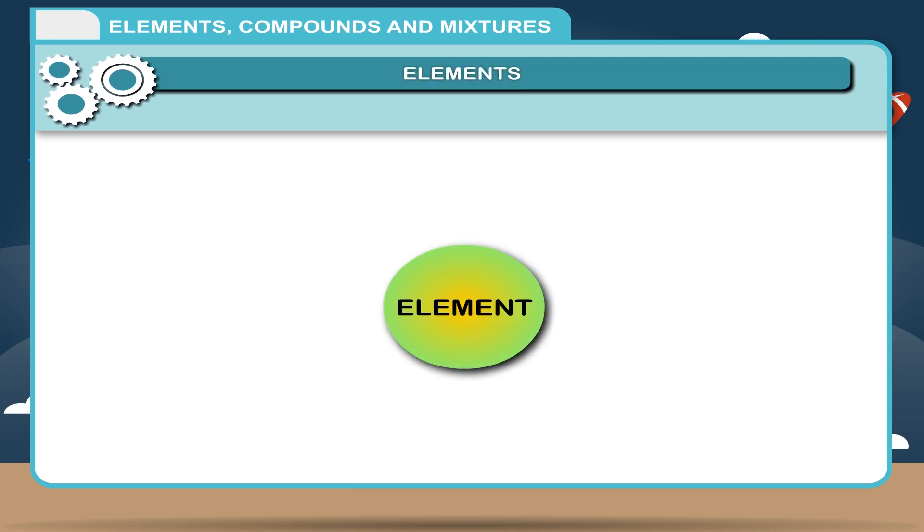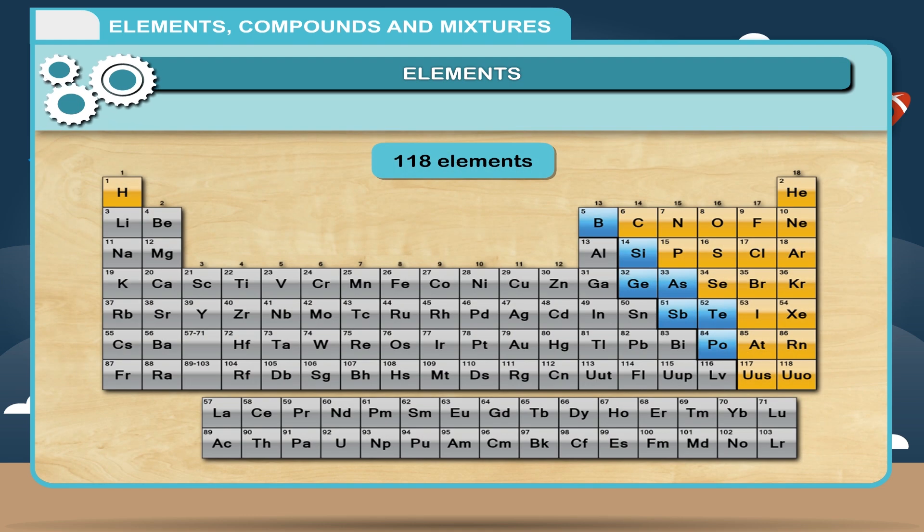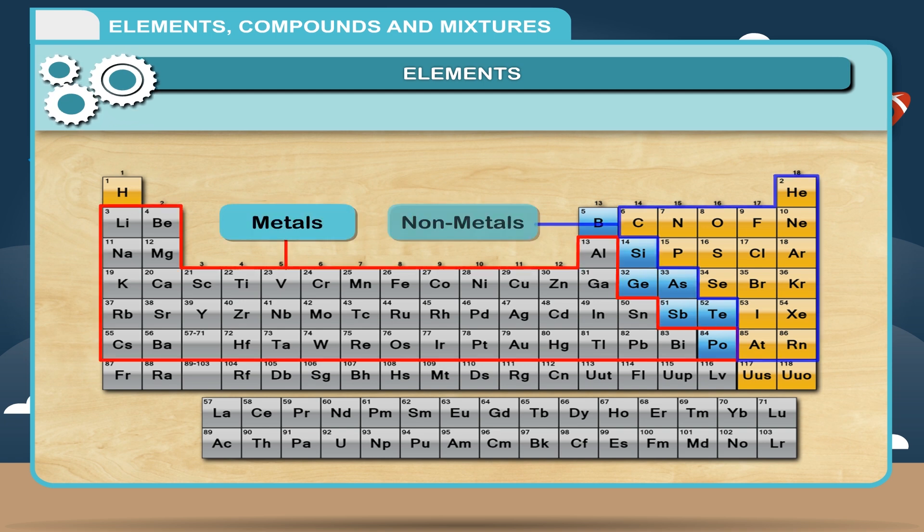Elements. An element is a pure substance which cannot be broken into two or more pure substances by chemical means. There are 118 elements known to man which have been placed systematically in a table called the periodic table. Elements are further divided into metals, non-metals, and noble gases.